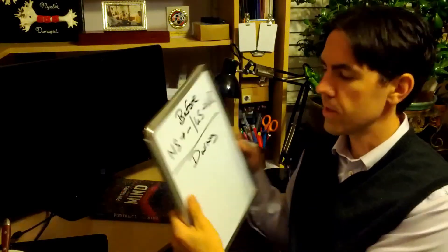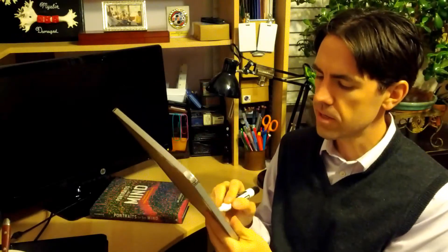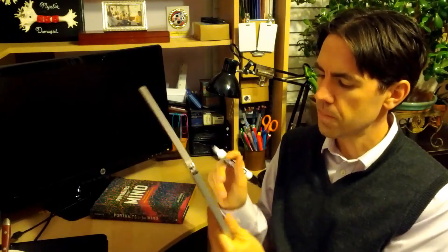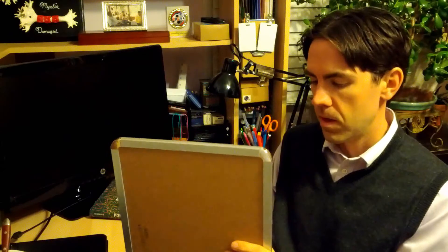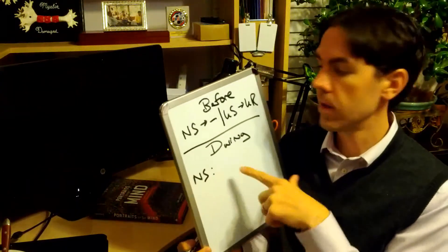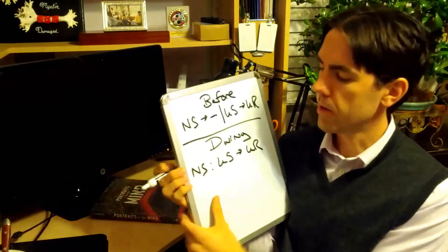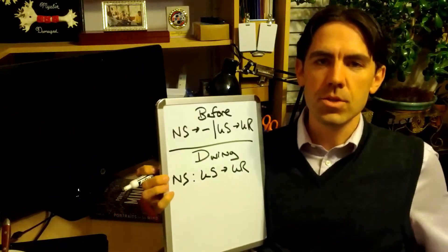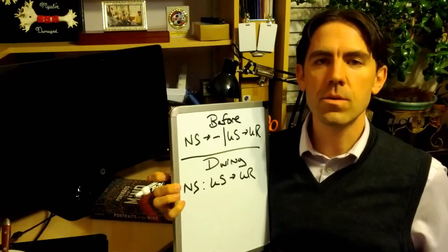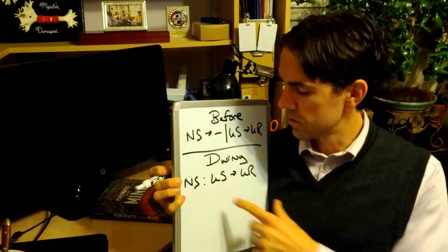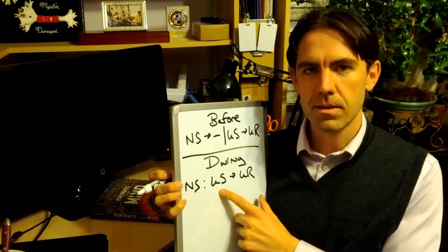Now, we need the during. During conditioning. And for the during, we have the NS followed by the US paired closely in time. And that's going to elicit the UR. So again, let me explain. We have the neutral stimulus, which is the tuna. You eat the tuna, and then within a few hours, you're going to get sick.